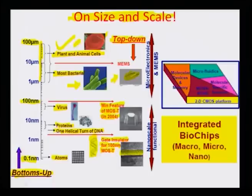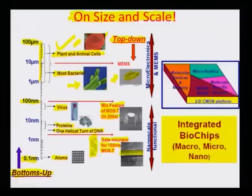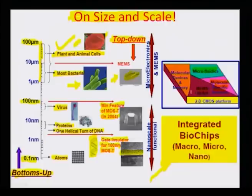MEMS changed direction mostly into biomedical MEMS and had immense utility in projects like the human genome project. This gave rise to a huge class of materials called integrated biochips, where components like microfluidics, molecular-specific sensors, MEMS systems, molecular devices, and memory structures got integrated into 2D CMOS platforms, enabling integrated sensing, detection, and diagnostics very rapidly.